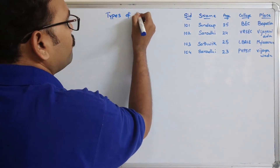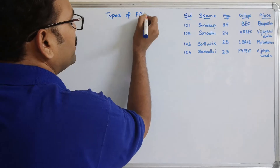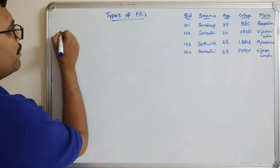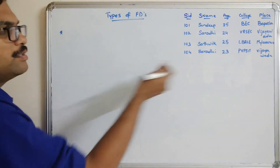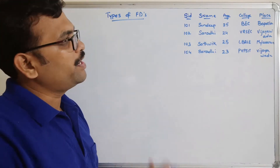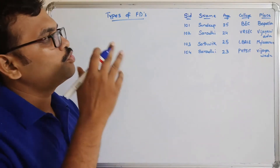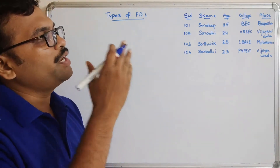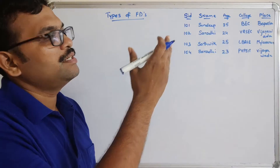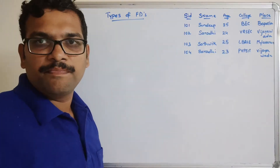Types of functional dependencies. We'll take a table as an example — a student table with columns: Student ID, Student Name, Age, College, and Place.